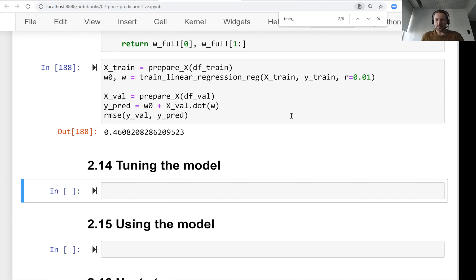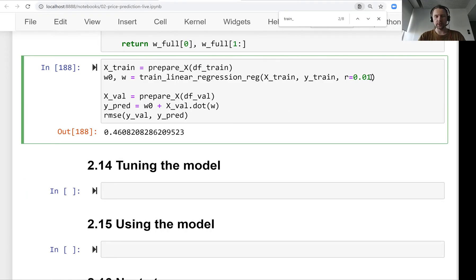Welcome back, this is lesson 14 of machine learning zoom camp session 2. Now we will talk about finding the best parameter, best regularization parameter for our linear regression model. In the previous section we talked about regularization as a way to solve the problem of duplicated columns in our data.